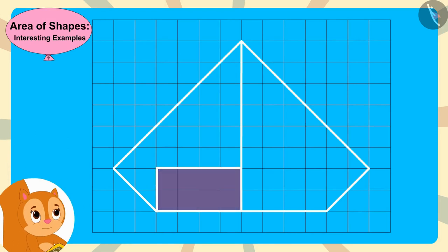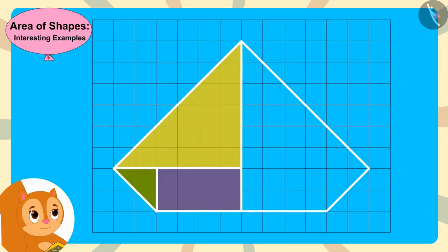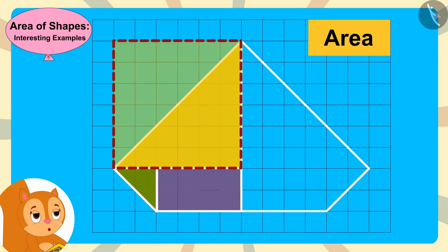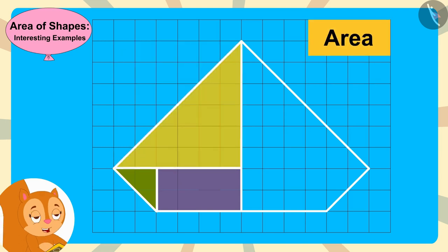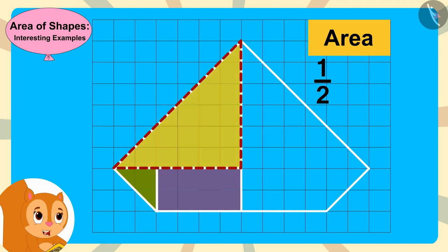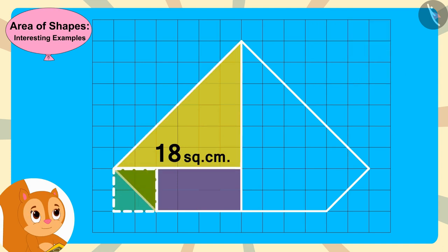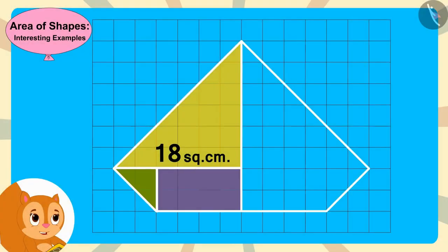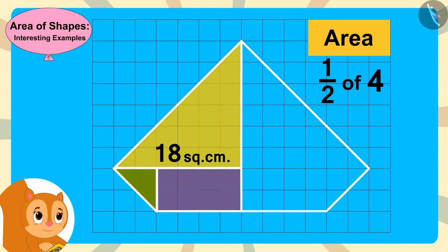Chanda then drew rectangles and triangles inside one part of the diamond's outline. This large triangle is half of a square, and the area of that square is 6 times 6, or 36 square centimeters. So the area of the big triangle is half of 36, or 18 square centimeters. This small triangle is half of another square, and the area of that square is 2 times 2, or 4 square centimeters.